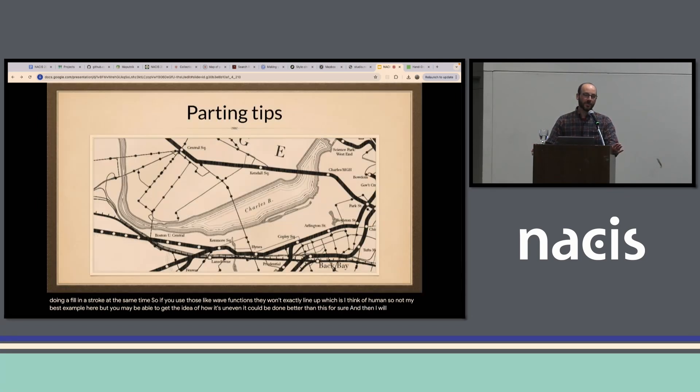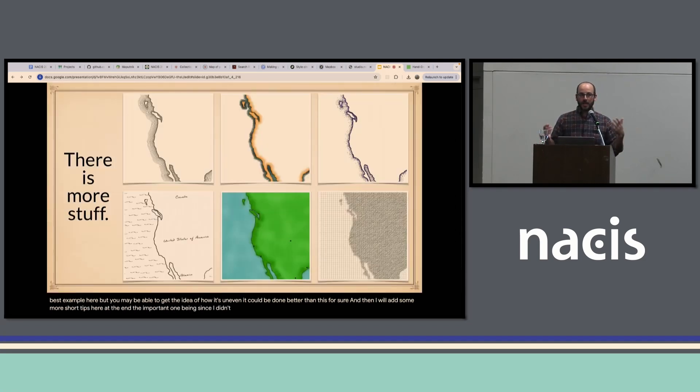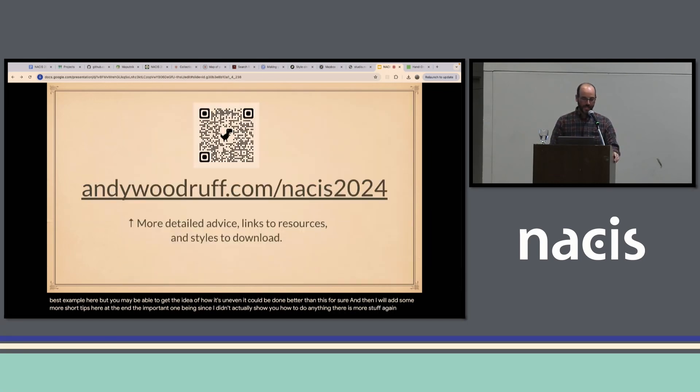Then I will add some more short tips here at the end. And the important one being since I didn't actually show you how to do anything, there is more stuff. Again, at that URL, it's my name dot com, nacis2024 or get that QR code. It has these slides but also an article that I wrote up and posted. It's got some links. It explains some of the things I just said a little bit more. And maybe most importantly, it has some actual files you can download and load into QGIS and try out these symbols and adapt them or whatever you want.